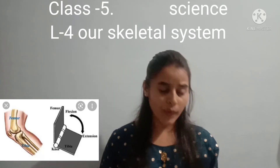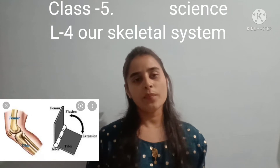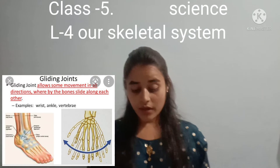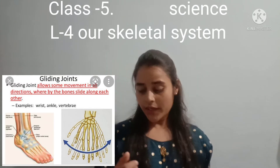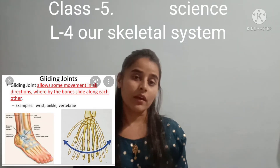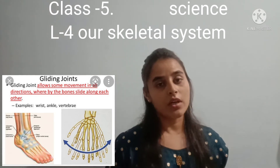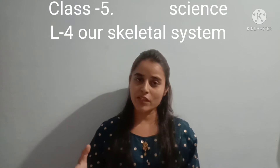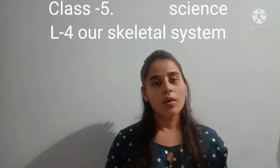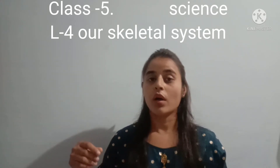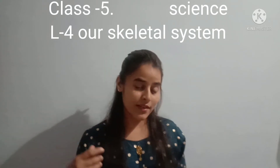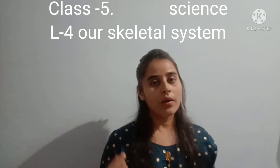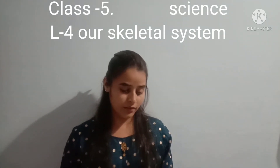They can move in only one direction because of a hinge joint. A hinge joint is present in our elbow and knees. Next is the gliding joint, which is seen in the bones of the wrist and the ankle. In our wrist and ankle, it allows gliding movement so the bones can glide against each other. Because of these joints we can move many body parts.